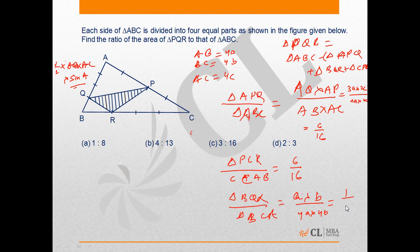Therefore, the required ratio of area of triangle PQR to triangle ABC will be 1 minus the sum of the three ratios we calculated: 6/16 plus 6/16 plus 1/16. This comes out to be 3/16.